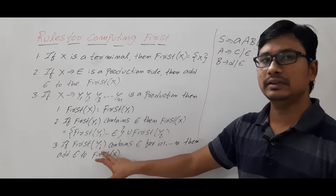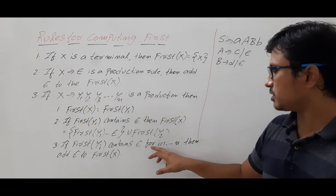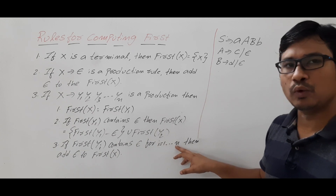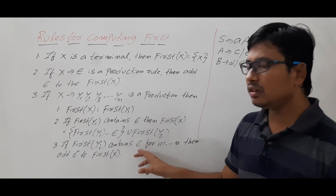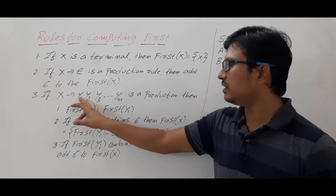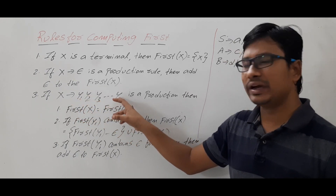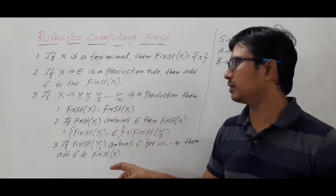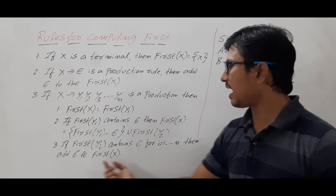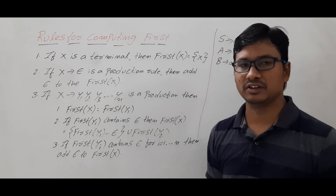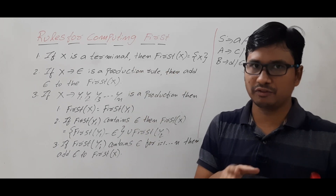Continuing Rule 3: if FIRST(Yi) contains ε for all i from 1 to n — meaning FIRST(Y1), FIRST(Y2), ..., FIRST(Yn) all contain ε — then the entire production implies X → ε, so add ε to FIRST(X). These are the rules to compute FIRST.